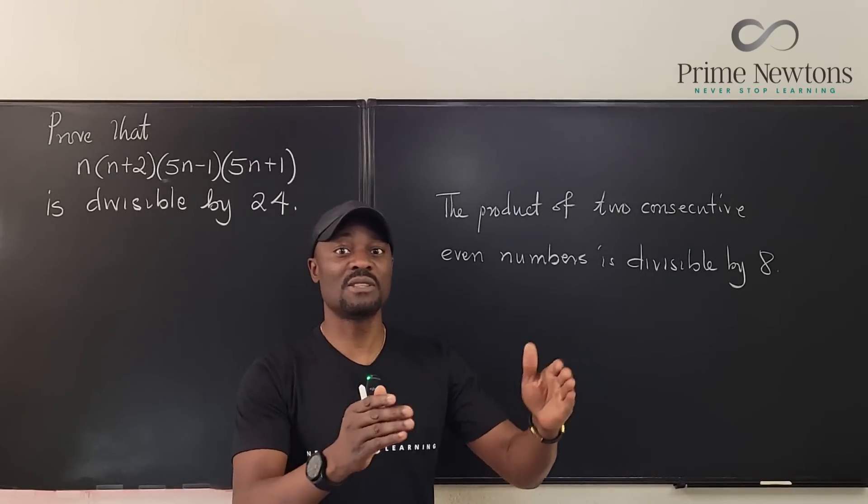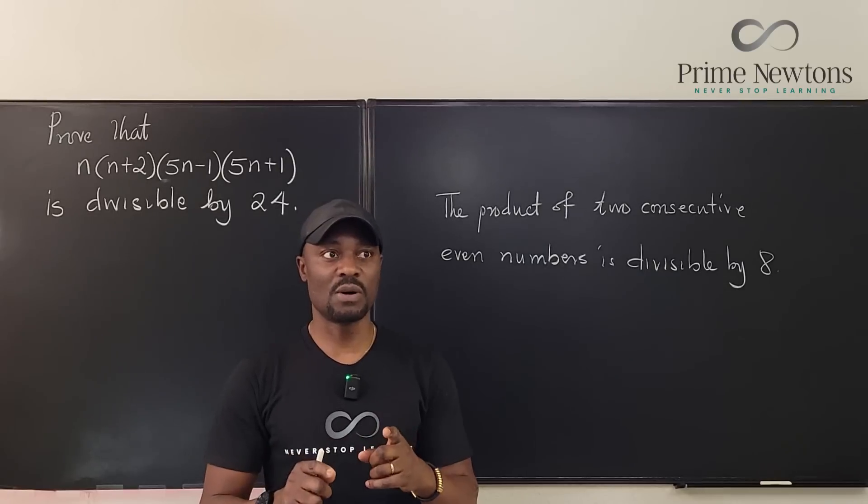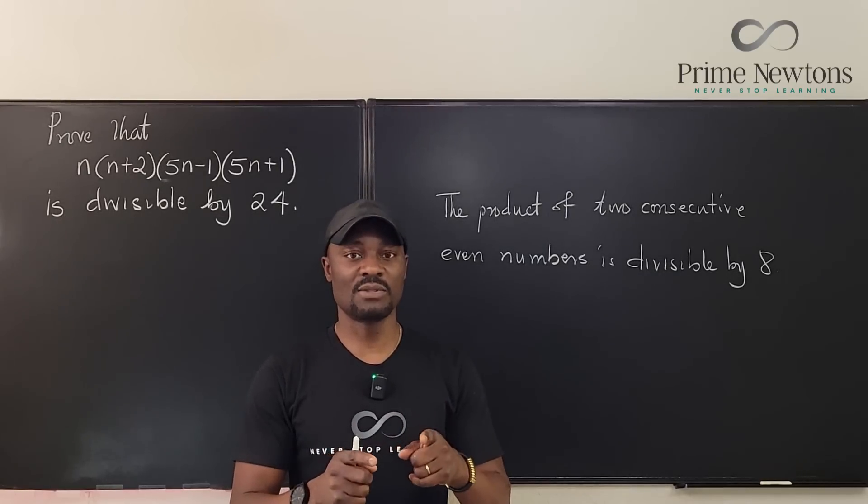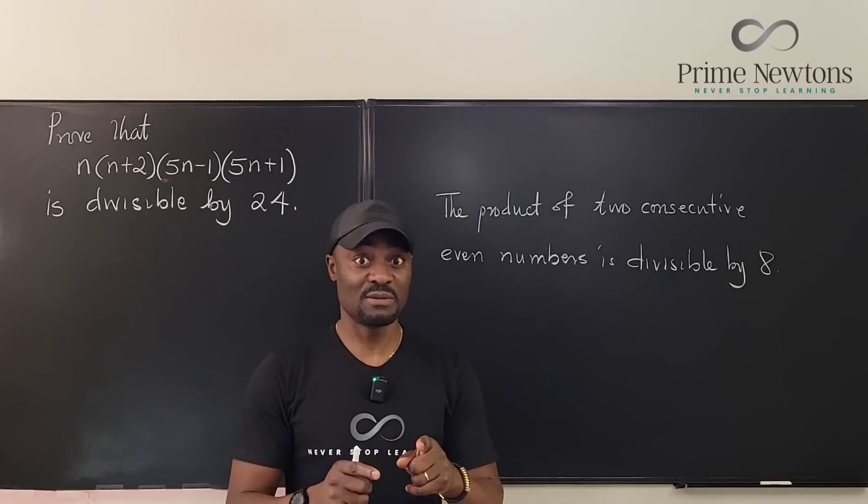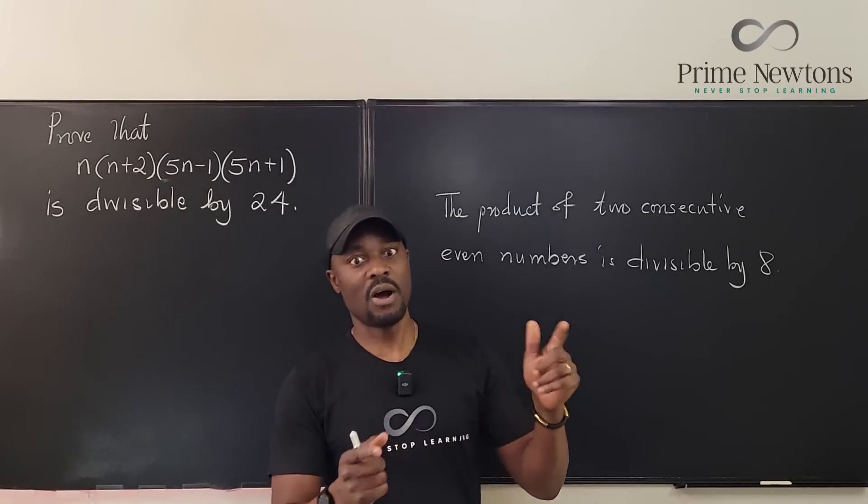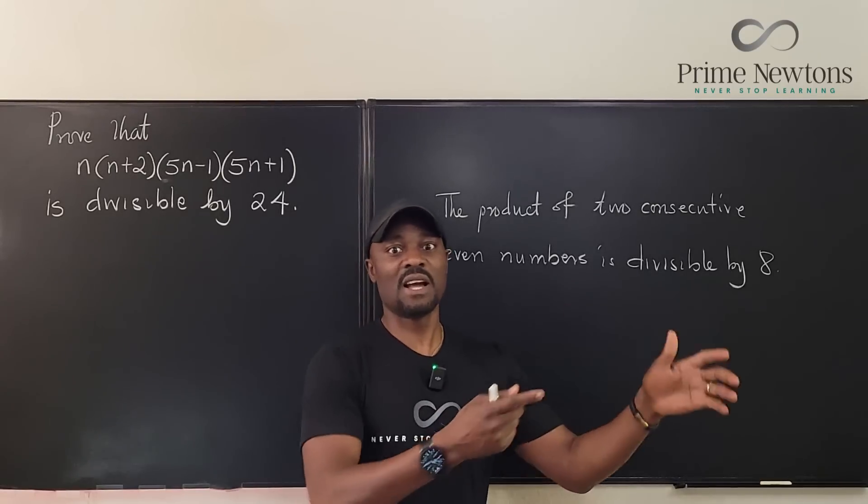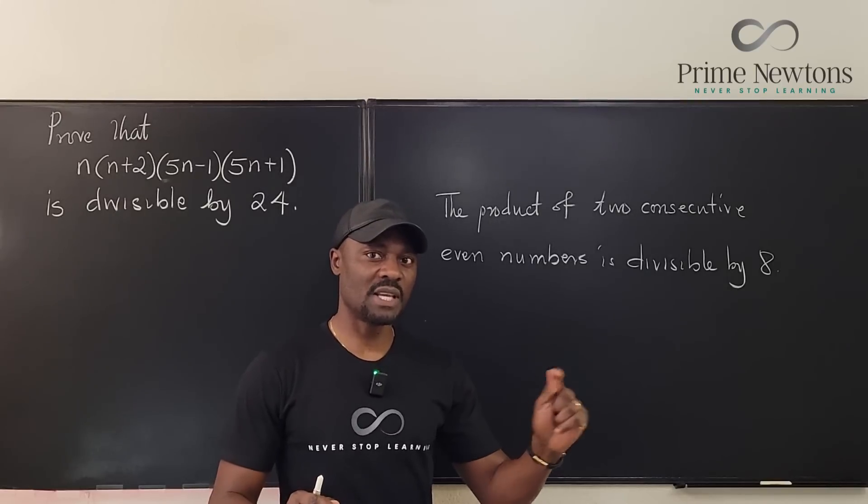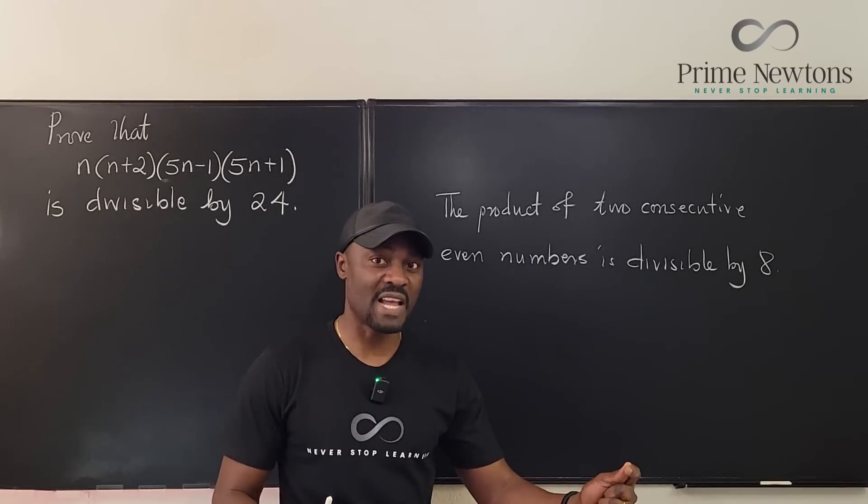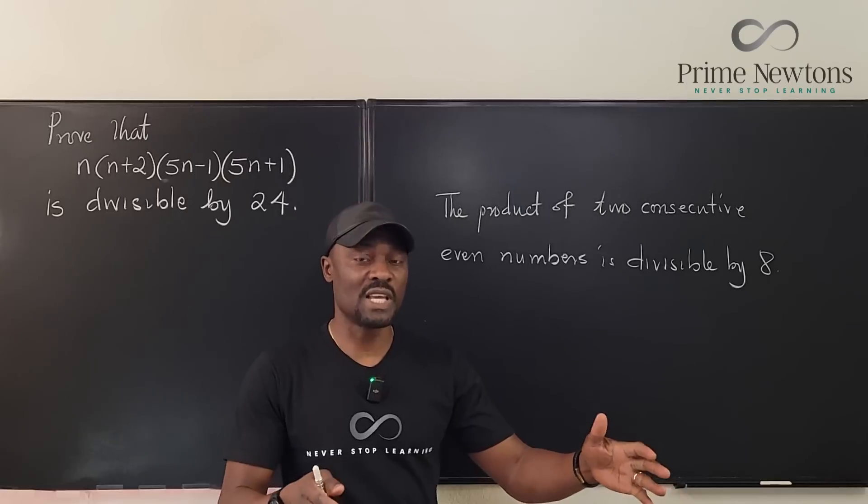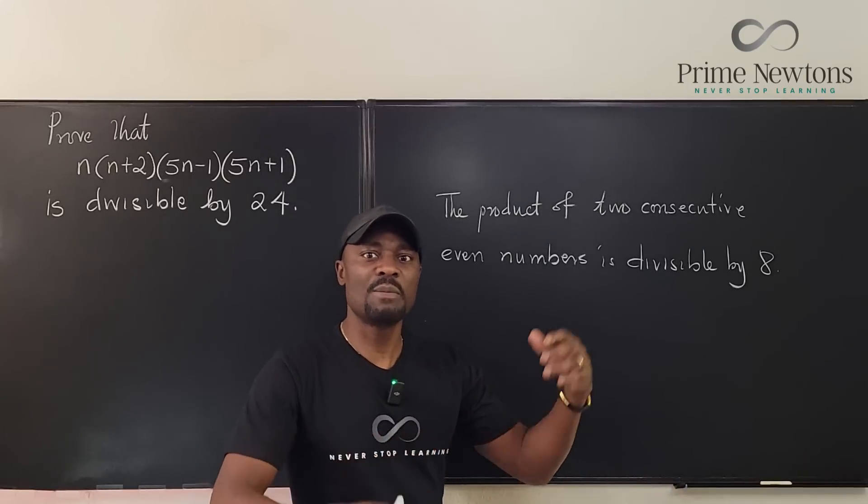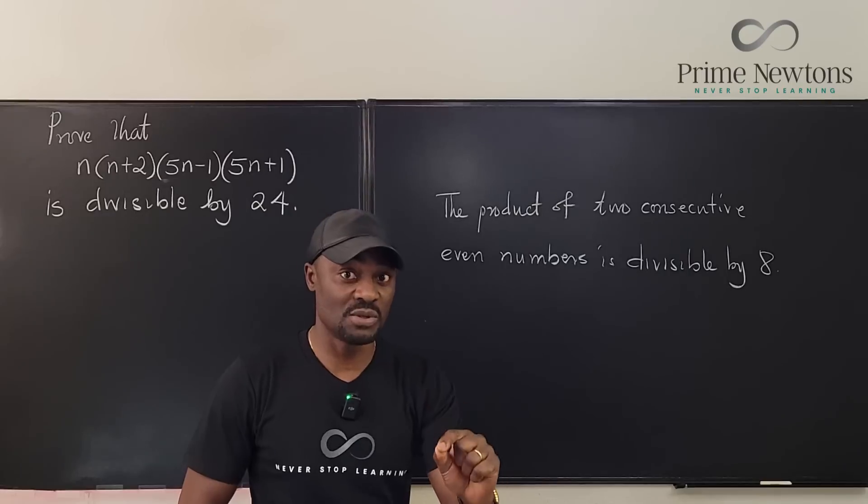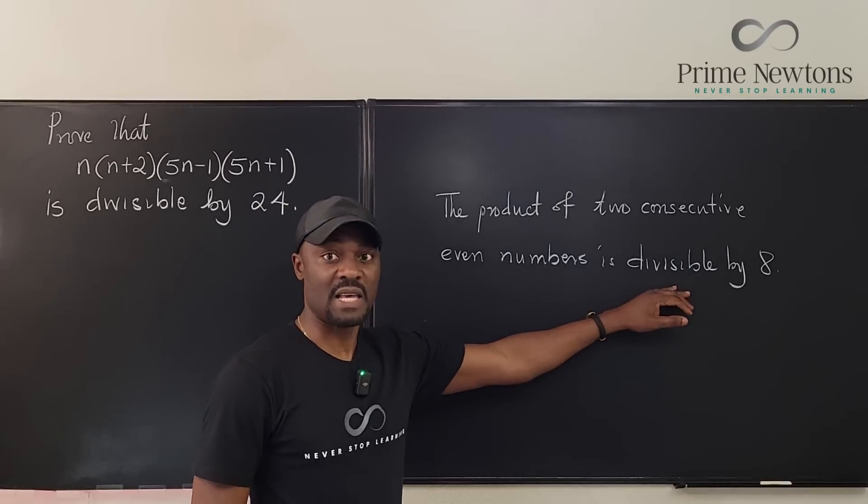Pick any two consecutive even numbers: 2 and 4, well that's 2 times 4 is divisible by 8. 4 and 6, 4 times 6 is 24, divisible by 8. 6 times 8 obviously divisible by 8. 10 times 12 is 120, divisible by 8. 12 times 14 is 168, divisible by 8. So if you keep trying numbers you'll see it, but we don't want to keep trying numbers. Let me just show you why the product of two consecutive even numbers is divisible by 8.